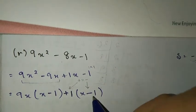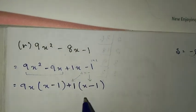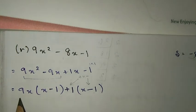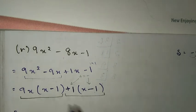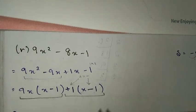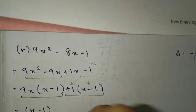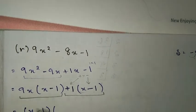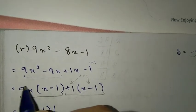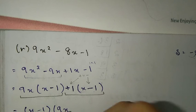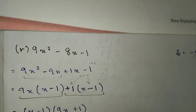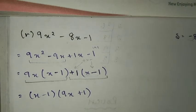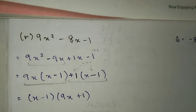Now common in first term and second term: x minus 1. Open bracket, 9x is there, x minus 1, then plus 1. So the answer is x minus 1 times 9x plus 1.